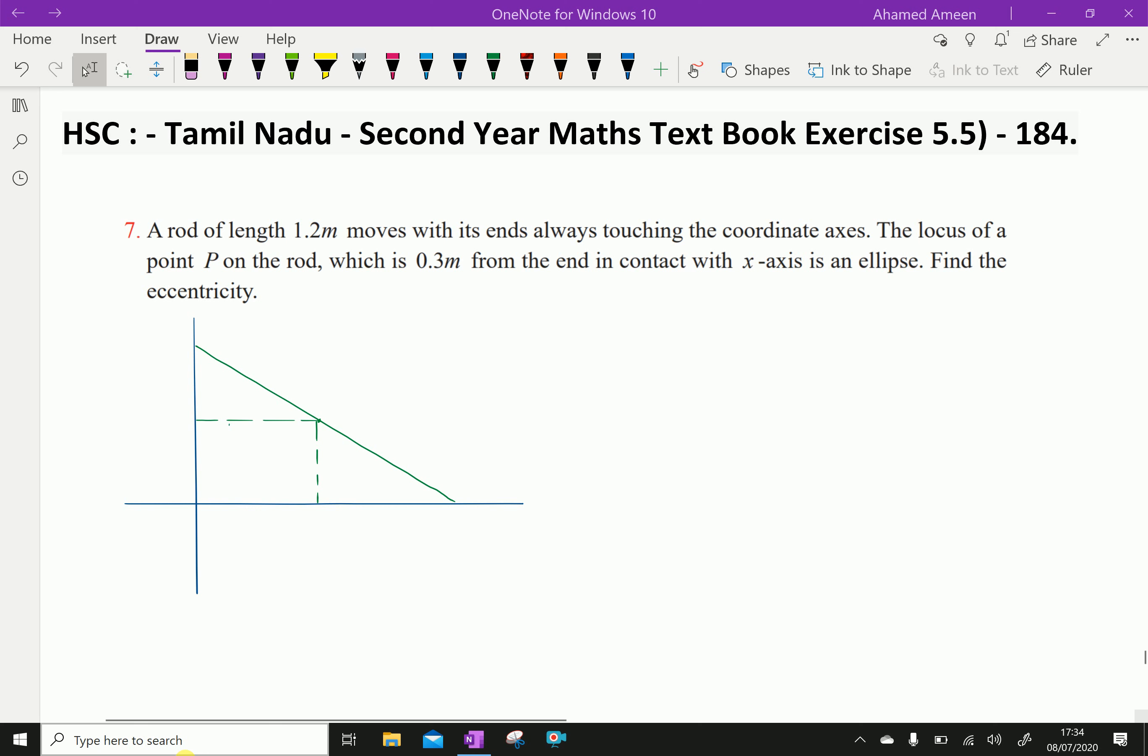Here, let this be the y-axis, this x-axis, this the origin. Now, let the point P be at coordinates (x₁, y₁). Let AB be the rod.